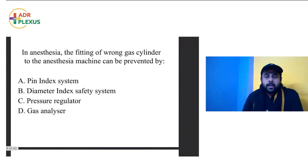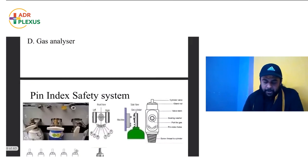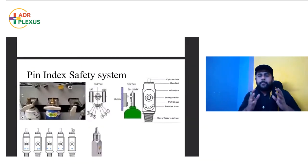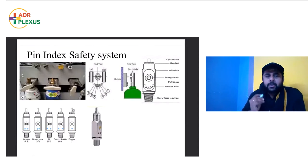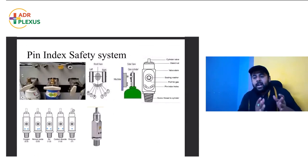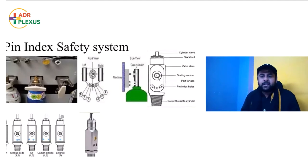Next question: in anesthesia, the fitting of a wrong gas cylinder to the anesthesia machine can be prevented by — pin index system, diameter index system, pressure regulator, or gas analyzer. This is very important regarding anesthesia machine and equipment. There are many cylinders — oxygen, nitrous oxide, carbon dioxide — and when attaching a cylinder to the back of the anesthesia machine, you must attach the appropriate one. There is a safety mechanism called the pin index safety system, like a lock and key mechanism.